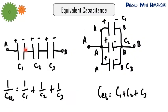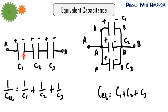Capacitors are said to be in series when the negative plate of one is connected to the positive plate of another, and there is no other wire connection between them — the wire from C1 goes directly to C2 with no other connection. When capacitors are connected in series, the equivalent capacitance is given by: 1/C_eq = 1/C1 + 1/C2 + 1/C3.